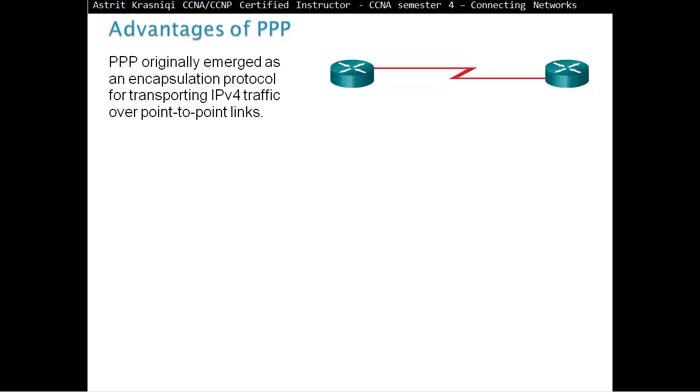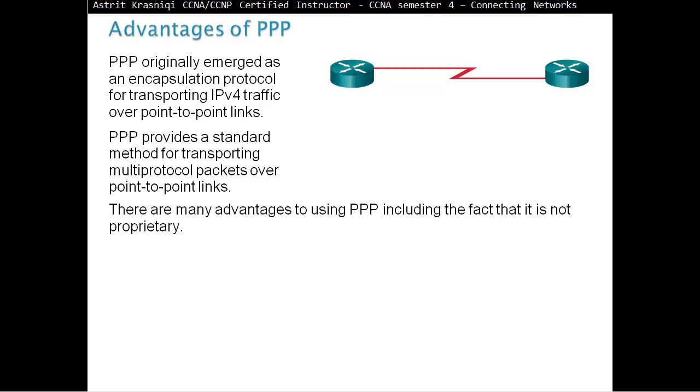Advantages of Point-to-Point Protocol. PPP originally emerged as an encapsulation protocol for transporting IPv4 traffic over Point-to-Point links. PPP provides a standard method for transporting multi-protocol packets over Point-to-Point links. There are many advantages of using Point-to-Point Protocol, including the fact that it's not proprietary.